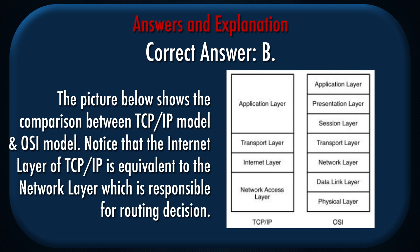Correct answer: b. Explanation: The picture below shows the comparison between the TCP/IP model and OSI model. Notice that the Internet layer of TCP/IP is equivalent to the Network layer, which is responsible for routing decisions.